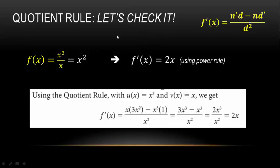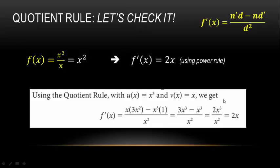Applying the quotient rule: the derivative of the numerator x³ is 3x², times the denominator x, minus the derivative of the denominator (which is 1) times the numerator x³, all over the denominator squared x². This gives (3x³ − x³) / x² = 2x³/x² = 2x, which matches. This is a nice check confirming the quotient rule works.